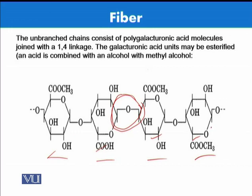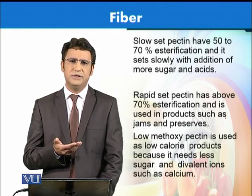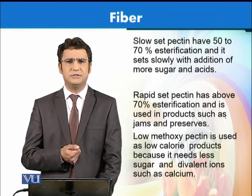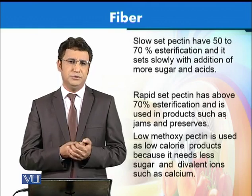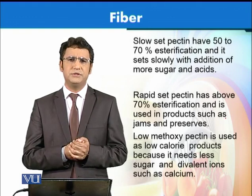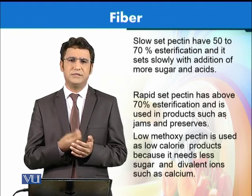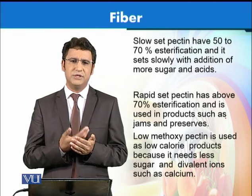These galacturonic acids may be esterified with an acid and an alcohol. Whenever this esterification process happens, we call these pectins esterified pectins. This esterification basically produces different kinds of pectin — you may be aware that there are slow-set pectins and fast-set pectins. These are produced in order to make jams, preserves, or similar food products where quick setting is needed for fast-set pectin, whereas in slow-set pectins the gel is formed gradually and slowly.